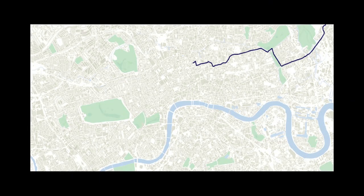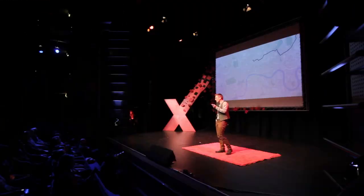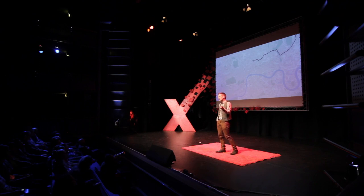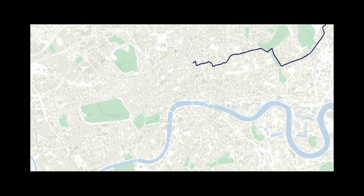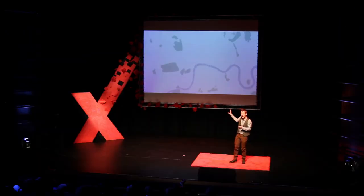If I had just shown you that journey as a line on a map, most of us would struggle to know why that journey had been made, particularly if you didn't have the benefit of the context of this event today. What I'm interested in is if we look at many, many journeys and visualize them in the right way, perhaps we can understand why people make these journeys across our cities. I need to make space on the map, so I'm going to remove the buildings.